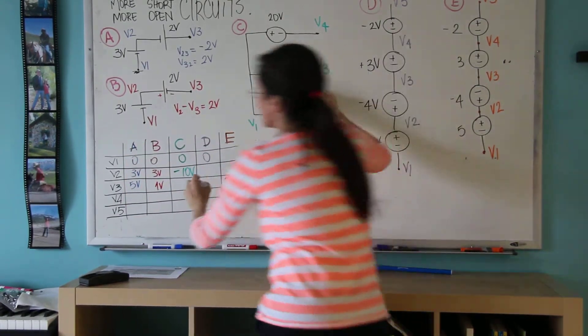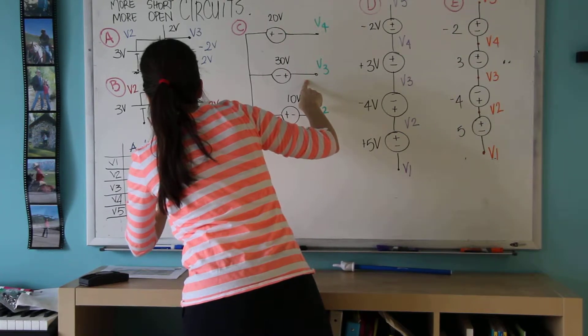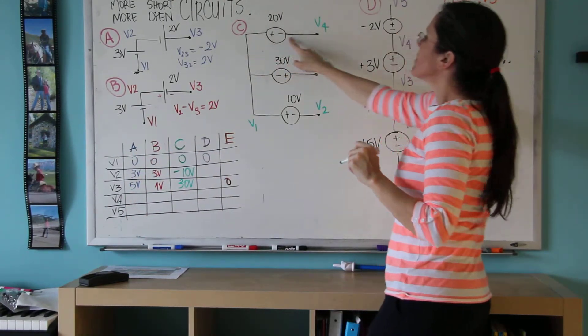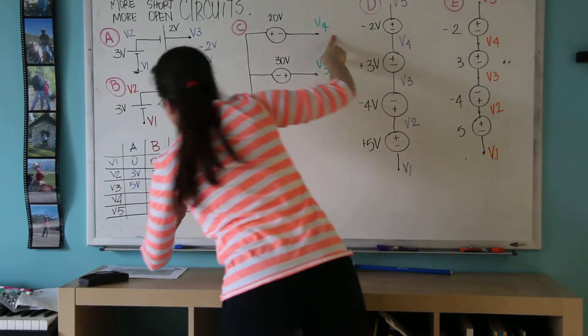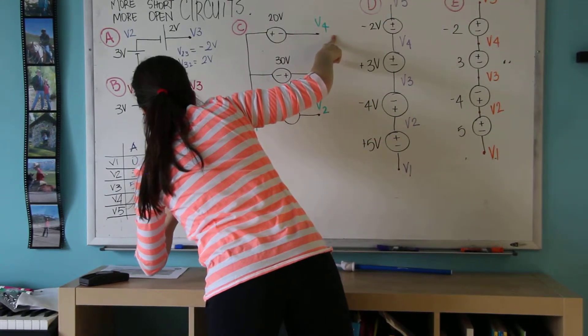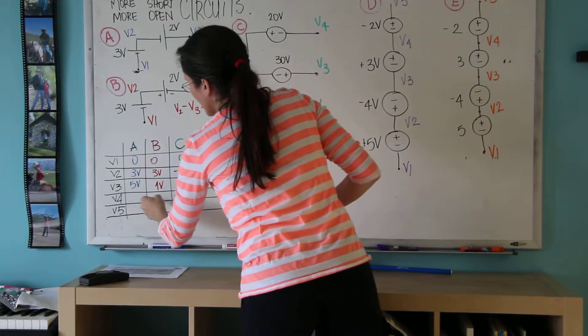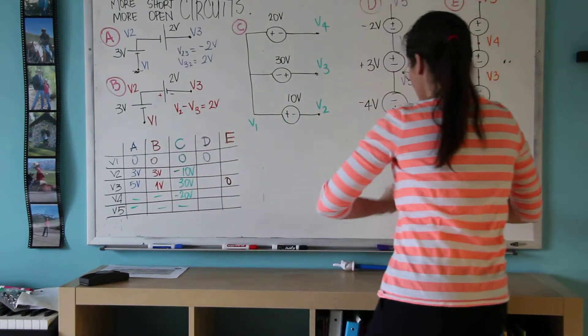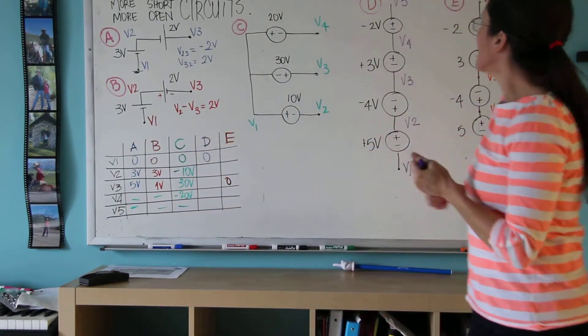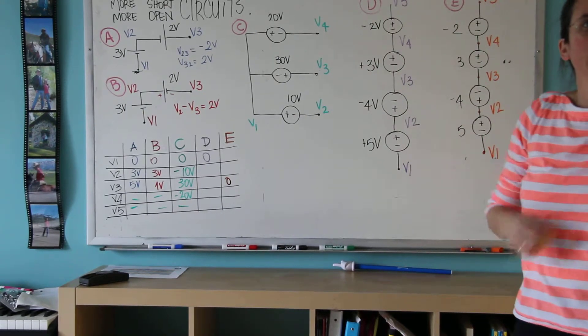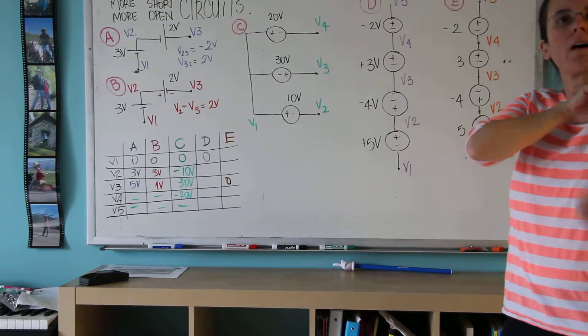If this is 0, this is 30 volts above it. So V3 is 30 volts. And this is 0, and this is 20 volts below it. So V4 is minus 20. And there are no nodes labeled V4 or 5.